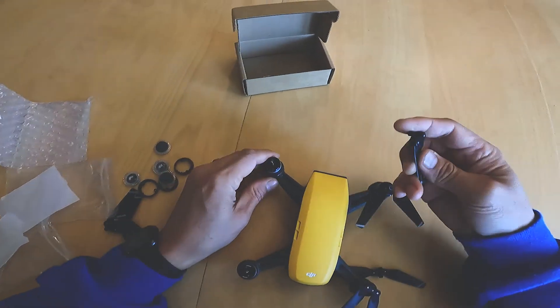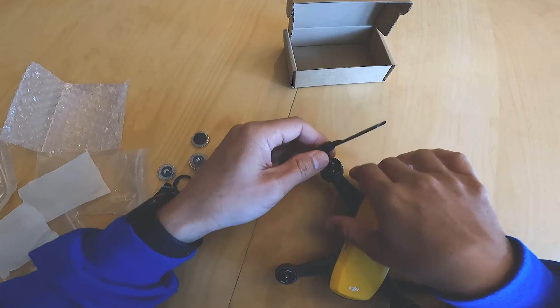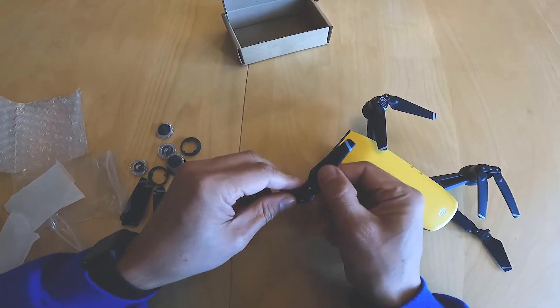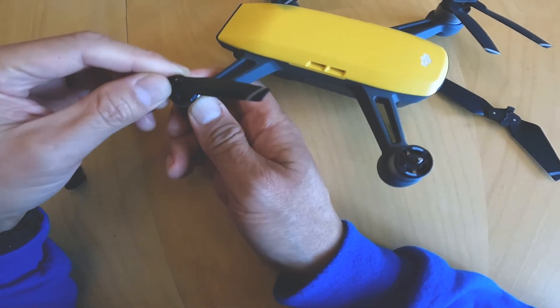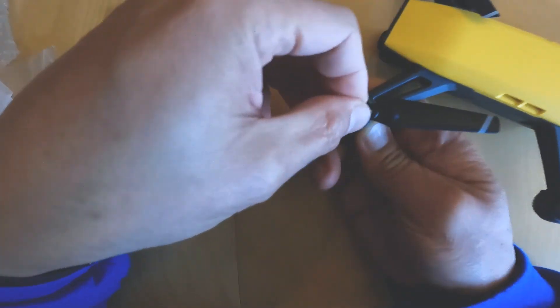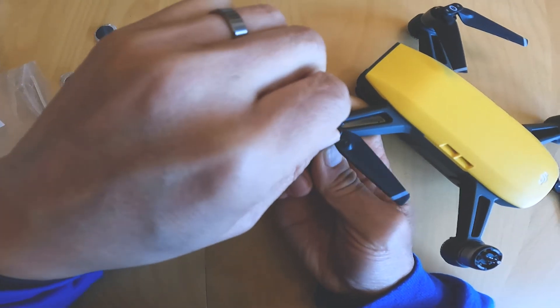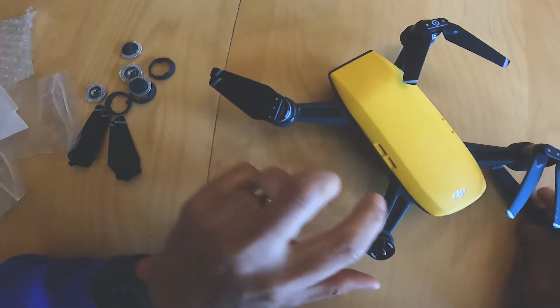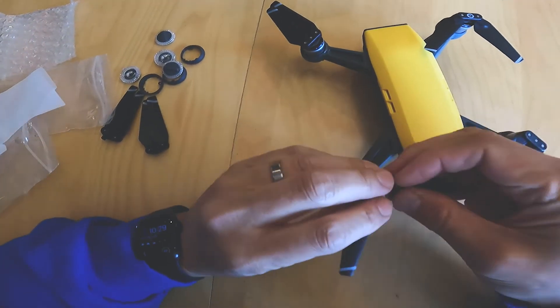So the way we'll install this is we need to push it down and then rotate it counterclockwise to tighten it. So push it down into the space and then rotate it until it clicks in. It's pretty secure. And we'll do the same thing on this side.